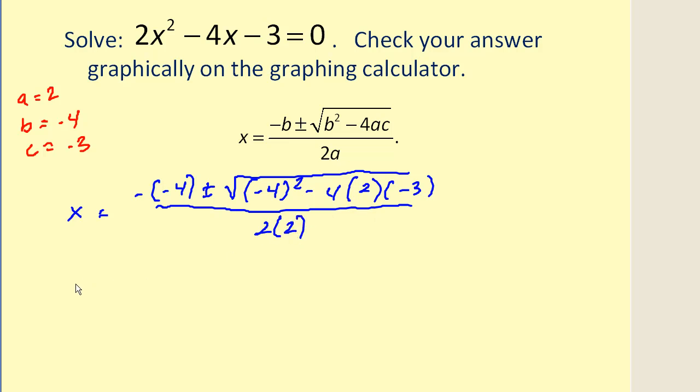And again, start simplifying. Okay. So negative, negative four becomes positive four plus. Let's come back to the discriminant. Our denominator is also four.